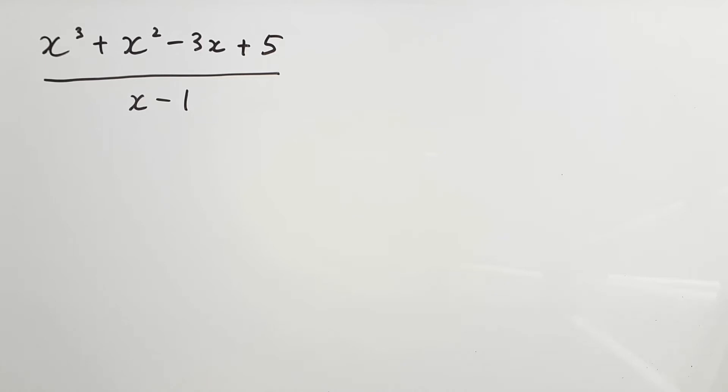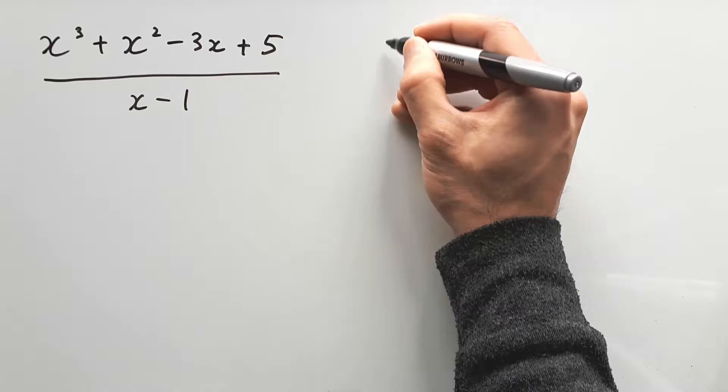So here's an expression dividing another expression. The one on top is known as a cubic polynomial, and the divisor is a linear factor of x minus 1. Most students learn to divide these off using long division, but that's a really long, outdated way of doing maths. Here's a much quicker way.